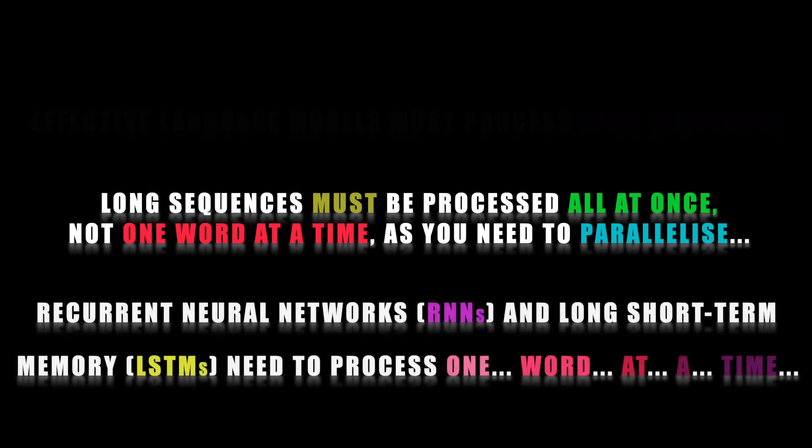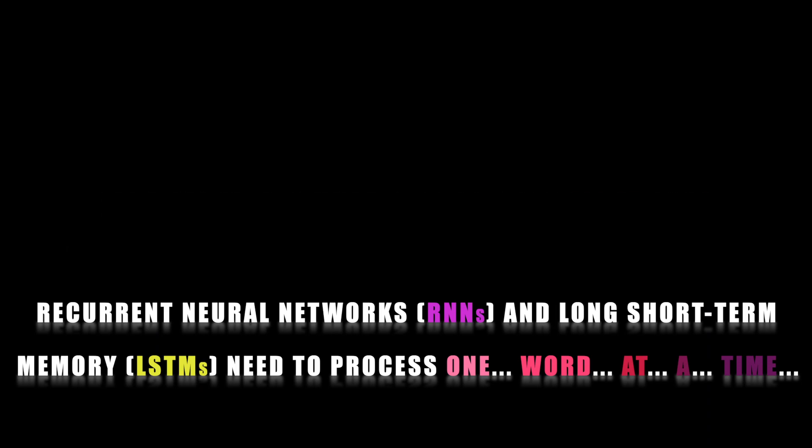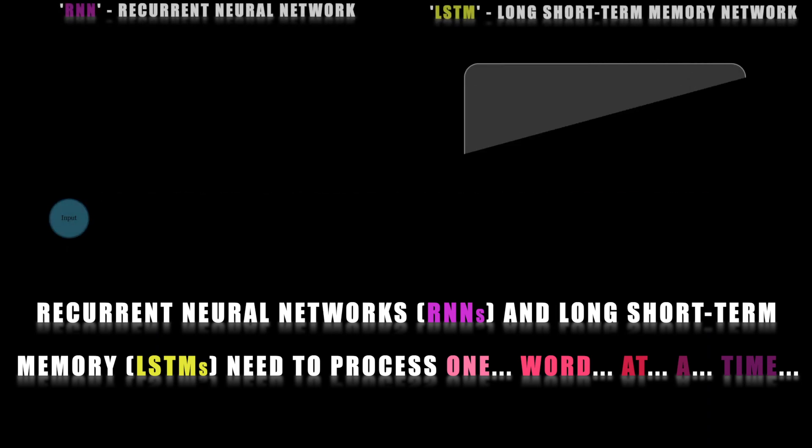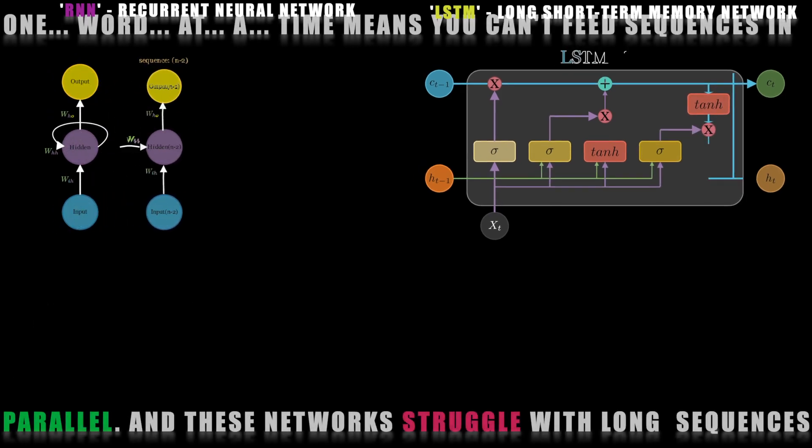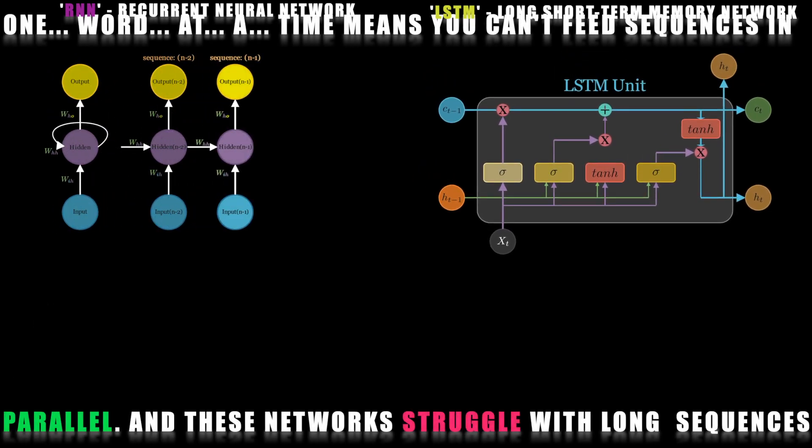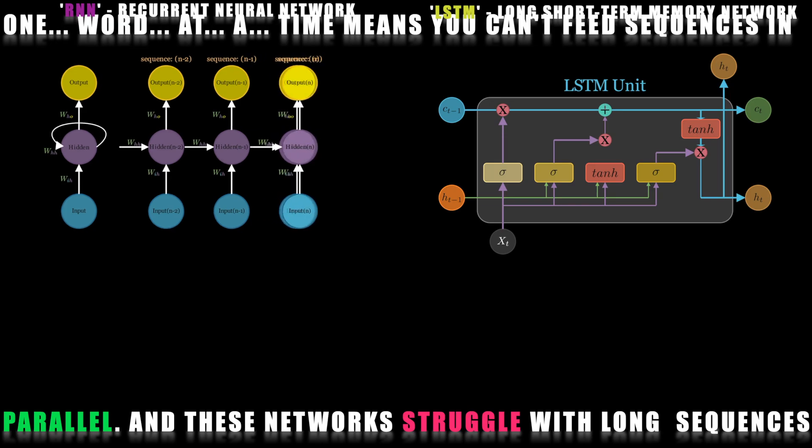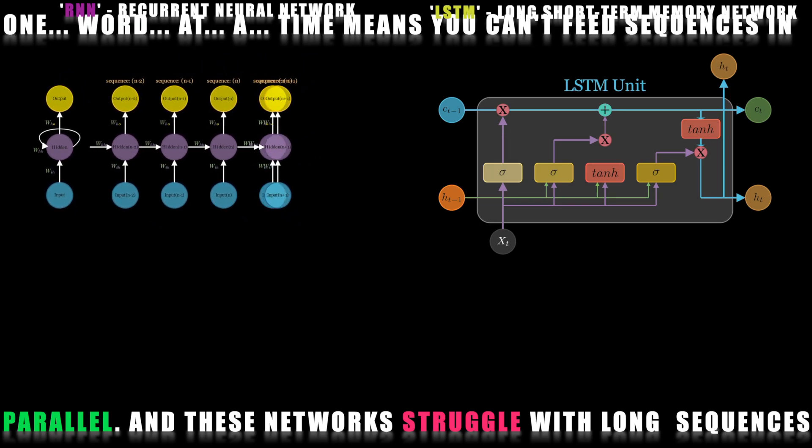While RNN and LSTM models have been popular for sequence processing in the past, they have limitations. These models struggle with longer sequences of text as they require the sequential processing of each word in order. This means you can't take advantage of parallel processing, so these architectures take far too long to train. Additionally, these models struggle with capturing very long-term dependencies in text.